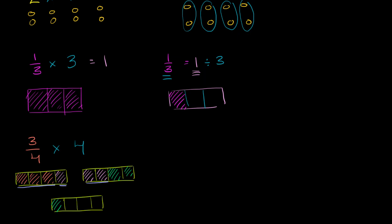So let's do that in a color I have not used yet, maybe white. So that's a fourth, that's 2 fourths, and that is 3 fourths. So notice, now I have 1 3 fourths